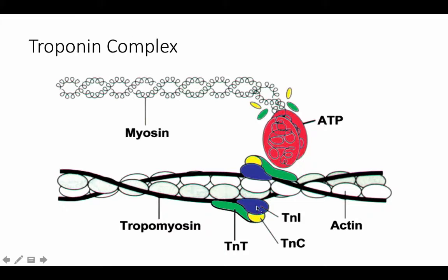Troponin C is one of three proteins which make up the troponin complex. Troponin is a central regulatory protein involved in the contraction of striated muscle. This complex is located with tropomyosin on the actin filament.